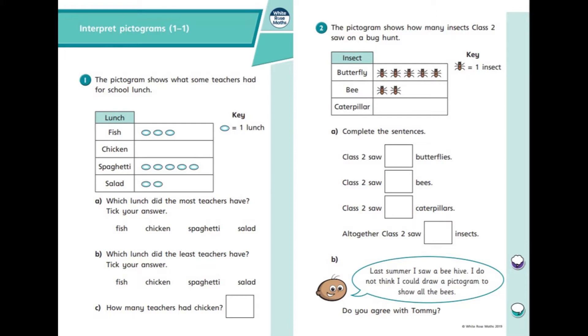This is our bronze sheet today again focusing on pictograms. Number one says the pictogram shows what some teachers have had for lunch today. So go through the A, B and C questions and complete the answers focusing on the pictogram given.